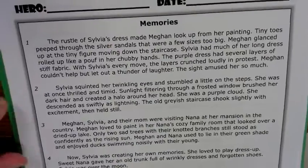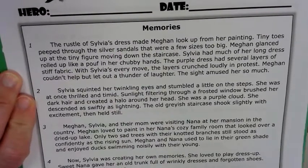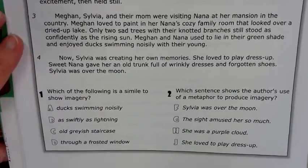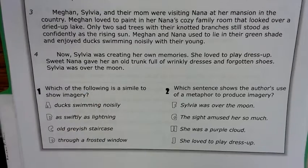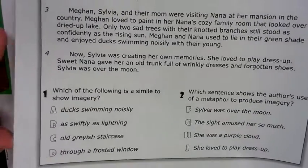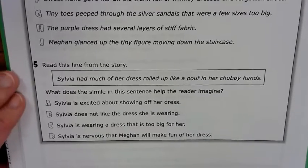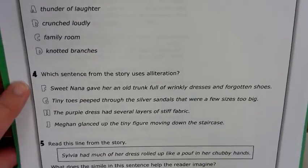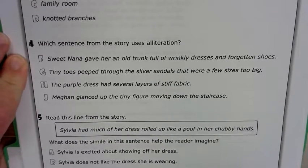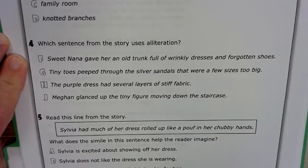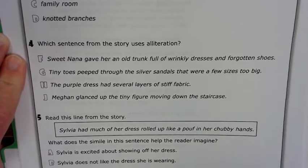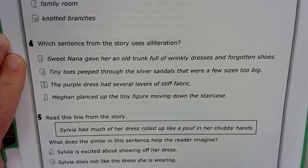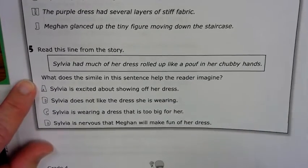The third activity for the week is from Education Galaxy — a super sheet where you read a story and then answer questions on figurative language, including simile and imagery. Remember, imagery is something you can picture in your mind. We also have alliteration — for example, 'Sarah sells seashells' repeats the 's' sound three times. Alliteration is when the same beginning consonant sound is repeated. There's also another simile here, which is comparing two things using 'like' or 'as.'